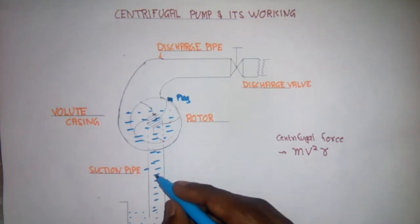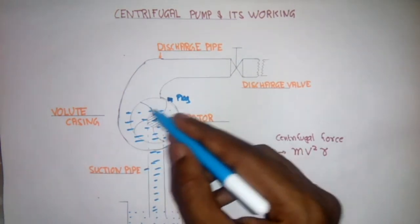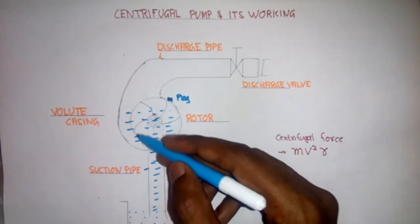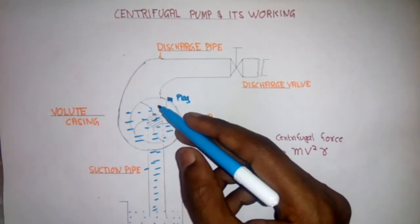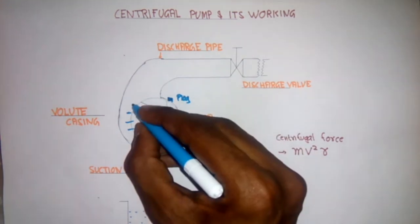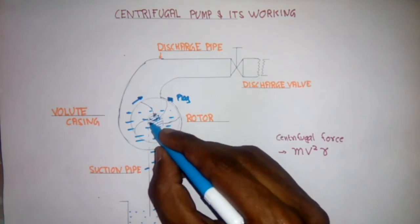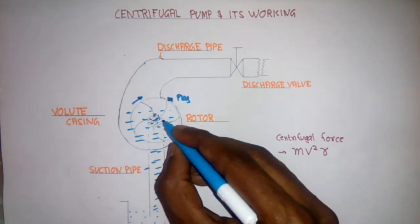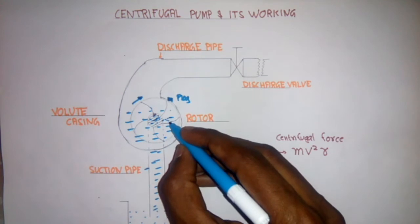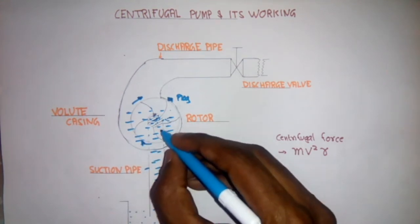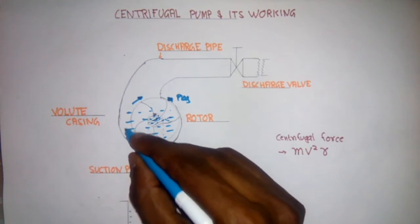What will happen when this casing has water and suction side has water? Now this rotor is rotating in that direction. Whatever water is here in the eye is coming here and the rotor is rotating in that direction. So it will try to push the water outside.